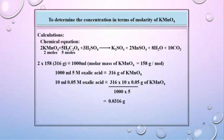Calculations: 2 × 158 corresponds to 1000 ml. Therefore, 1000 ml 5 molar oxalic acid equal to 316 g of KMnO₄. Hence, 10 ml 0.05 molar oxalic acid corresponds to 316 × 10 × 0.05 ÷ 1000 × 5. Answer is 0.0316 g.